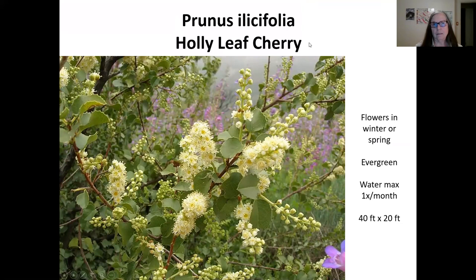The holly leaf cherry has a relative, the Santa Catalina cherry, found only in the Santa Catalina Islands in Southern California. This is a slow-growing tree that flowers beautifully in the spring and is evergreen, so it doesn't drop its leaves. The recommended water is maximum once a month, though during this drought I've been watering mine twice a month and it's coming out just fine. It can get up to 40 feet tall and 20 feet wide.